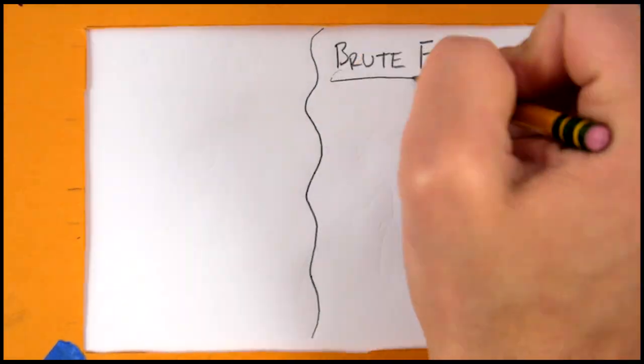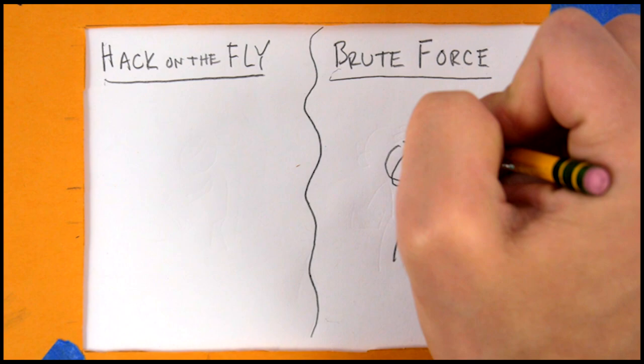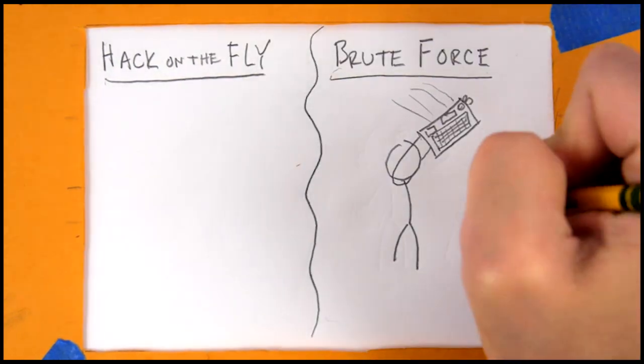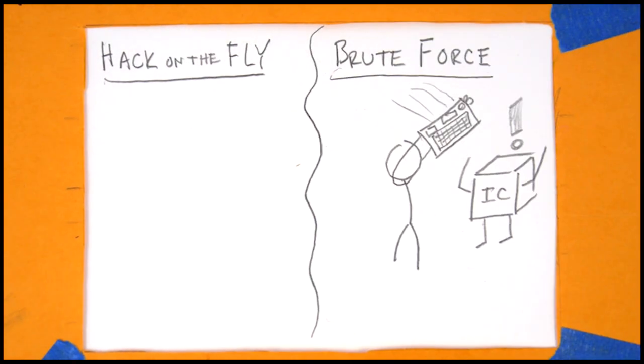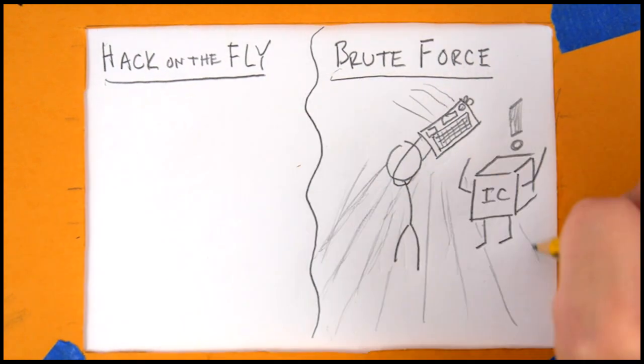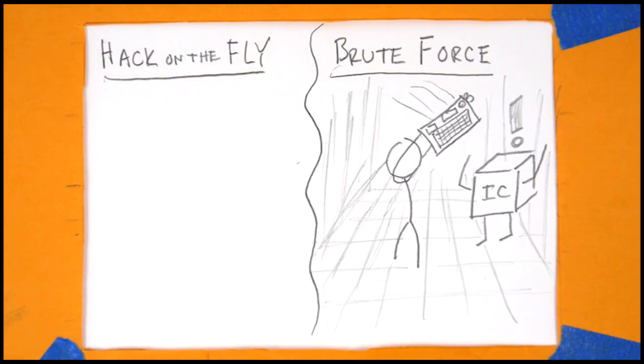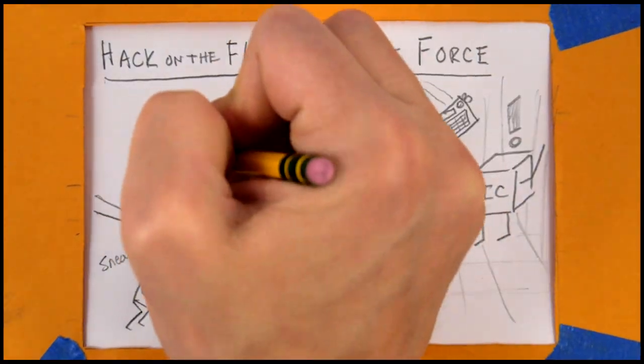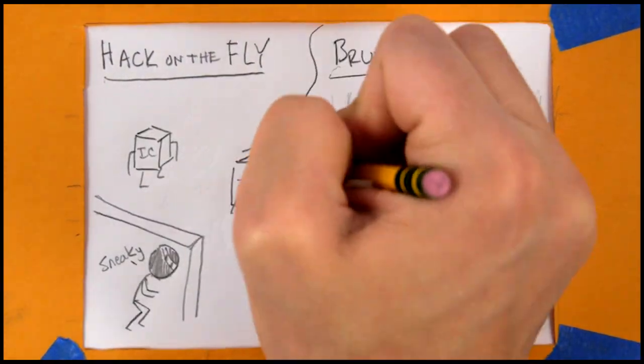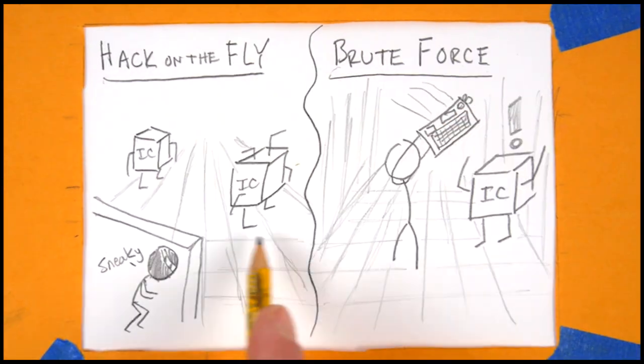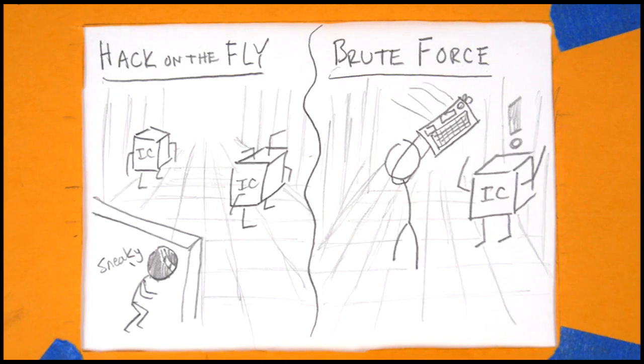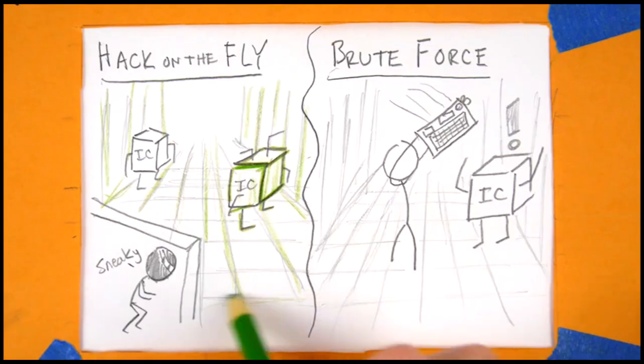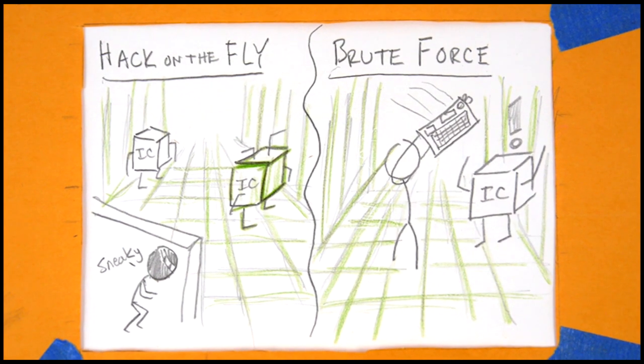Brute force, as the name suggests, is the less subtle approach. The hacker throws damaging code and malicious hacks at the target in order to break down firewalls and destroy security measures. It's quick and noisy, but gets the job done. Hack on the fly is the approach for the hacker trying to finesse the target. The firewalls are poked and prodded, searching for weaknesses to circumvent defenses. This way is more subtle, but can be riskier if not careful.